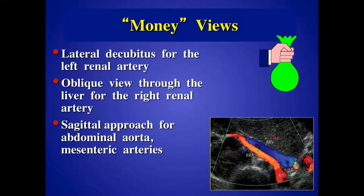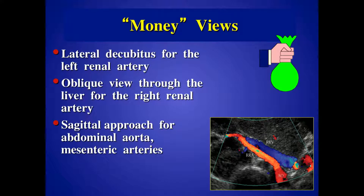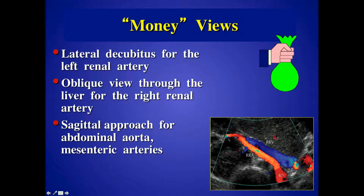The other key element is getting the right views — I call these money views, and I show these to my sonographers right away. Once they're able to get these views, obtaining the data is relatively straightforward. They know to change the position of the patient from one decubitus position to the other, sometimes even going coronal for the renal arteries. The way we get the right renal artery in its entirety is by scanning through the liver, turning the patient up — you can see the renal artery in its entirety. It's just a matter of dragging the sample volume from the origin at the aorta into the hilum of the kidney.